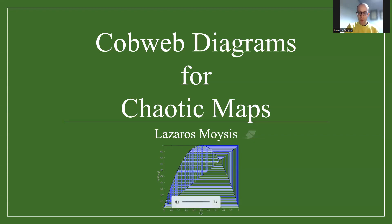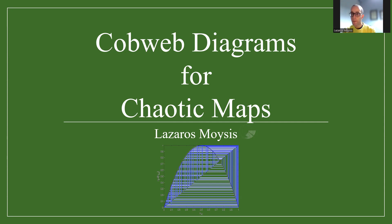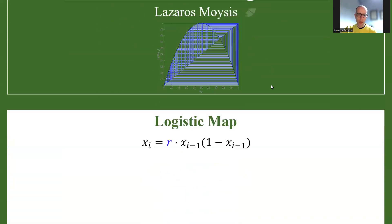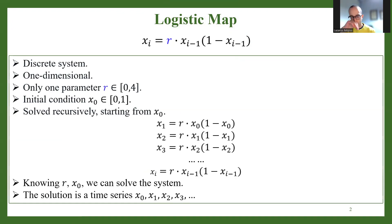Greetings everybody. On this video we are going to discuss about the cobweb diagrams for chaotic systems, specifically discrete time. I already have some videos about bifurcation diagrams and phase portraits for discrete systems — I strongly suggest you go watch those first and then come back. I'm going to explain the cobweb diagram using the logistic map.